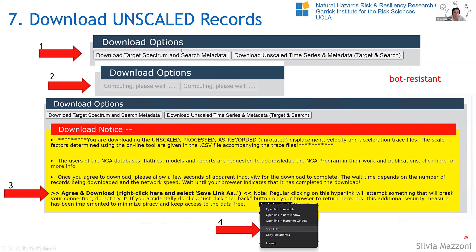Then you download the unscaled records. If you've already downloaded certain records or don't want to exceed your limits, you can skip the download. Make sure you give the program time — it says 'computing, please wait' — because it needs to go to S3 on AWS, grab the records, zip them into a file, and prepare it. This may take a little time depending on how many people are using the service. Then just like before, right-mouse click on the link and save the files.